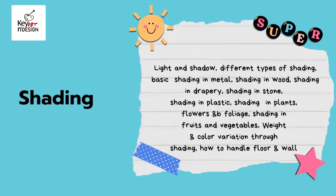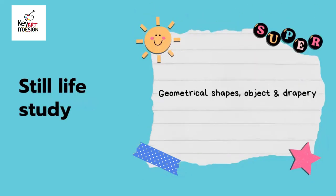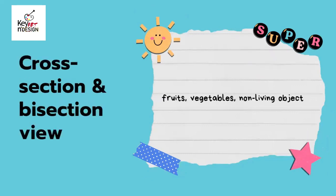Shading covers light and shadow, different types of shading, and shading in various materials: metal, wood, drapery, stone, plastic, plants, flowers and foliage, fruits and vegetables — including weight and color variation through shading, and how to handle floor and wall.